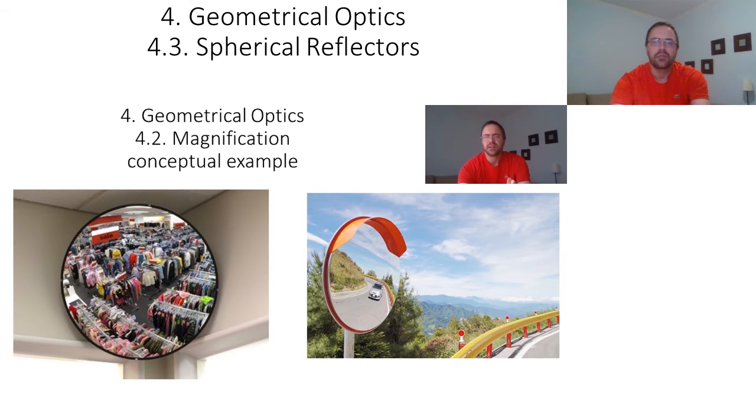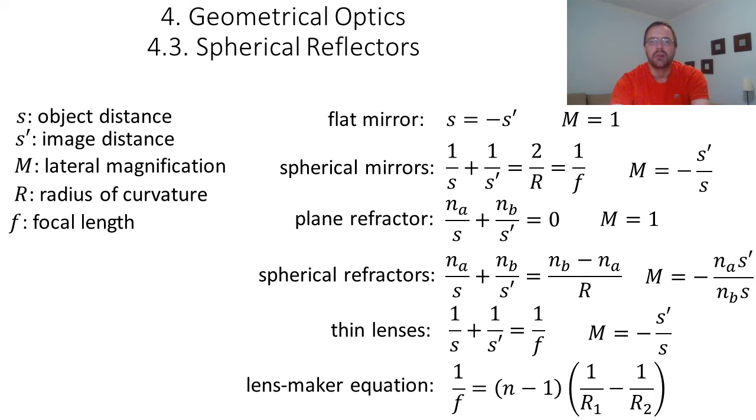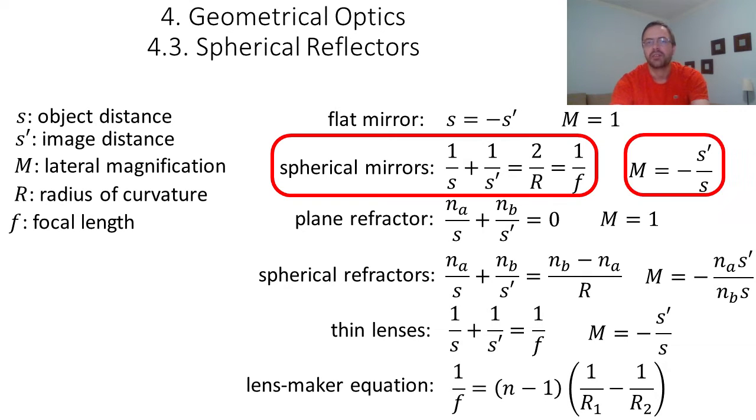For spherical reflectors, we have the relation 1/s + 1/s' = 2/r = 1/f, and the magnification is given by -s'/s.